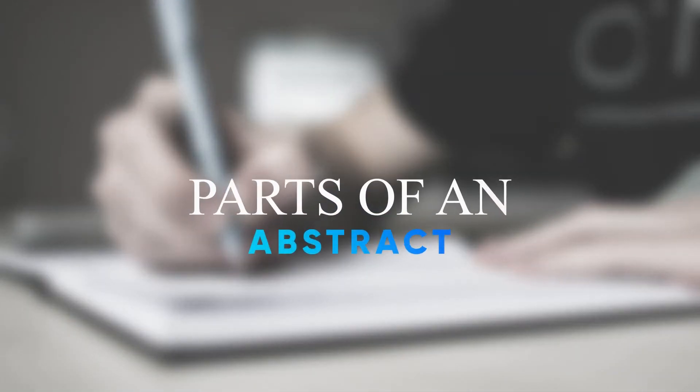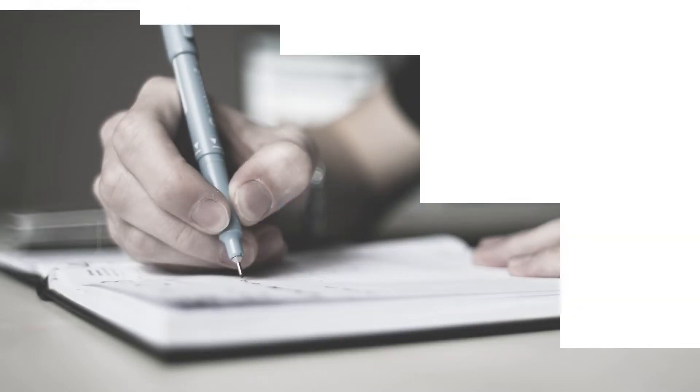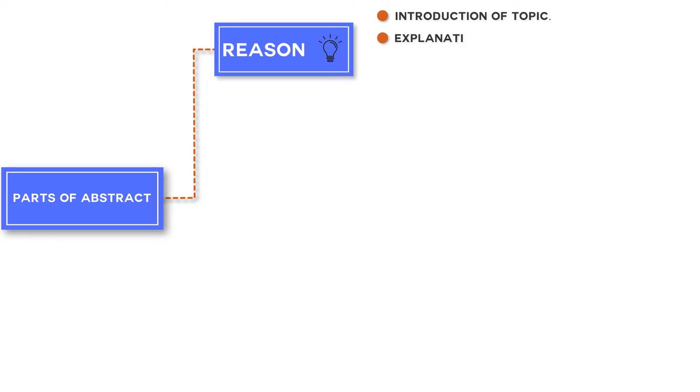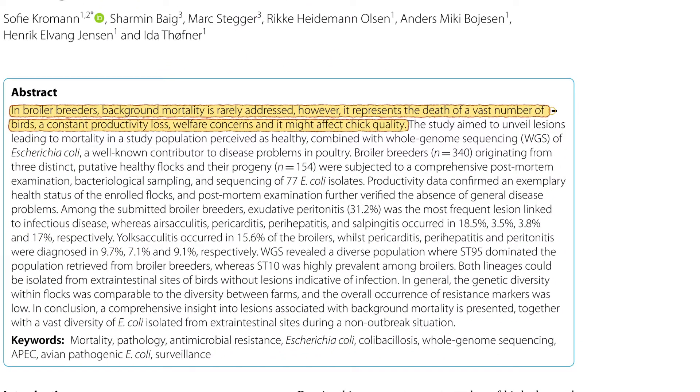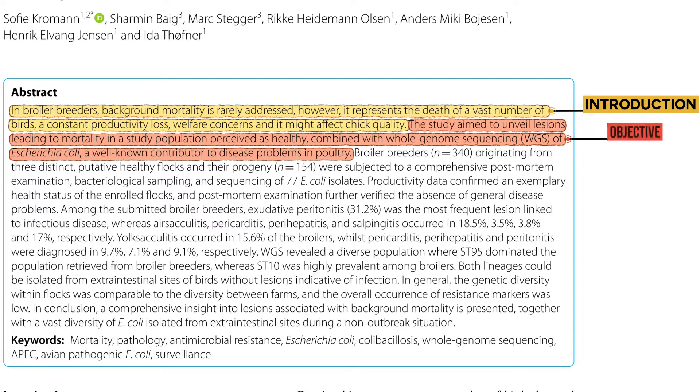So what are the things that you need to include when you write an abstract? First thing you need to include in the abstract is the reason for writing the paper. This includes introduction of the topic and explanation of why the topic is important in your field and gaps in the research. This can be done in maximum two to three sentences if done well. Let's look at this paper. You can see two sentences here where the authors have introduced the paper and written the reasons behind the paper.